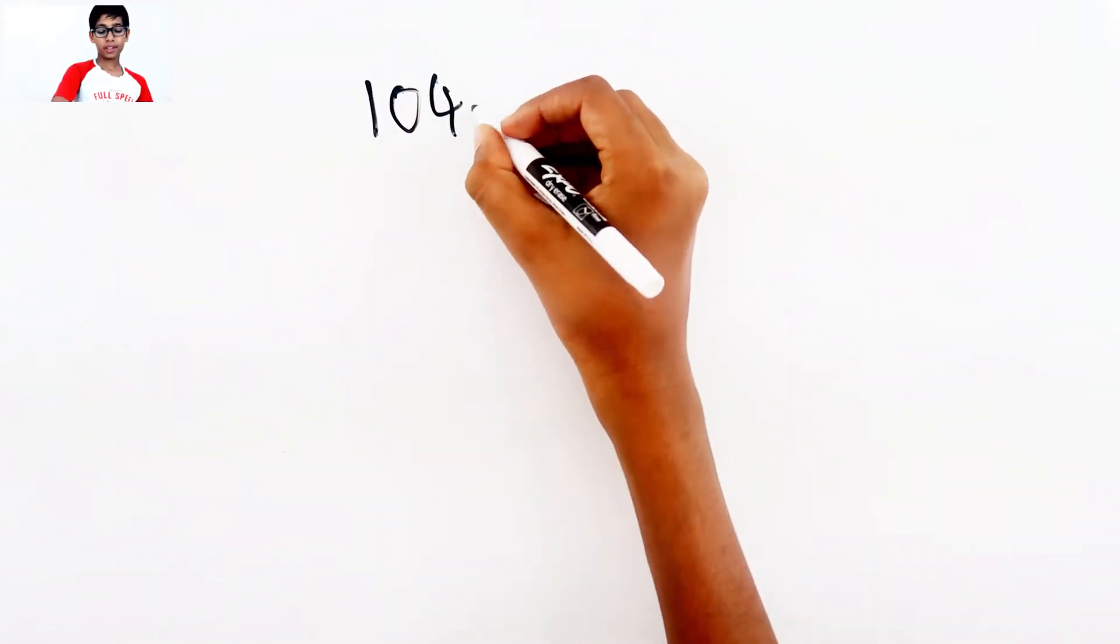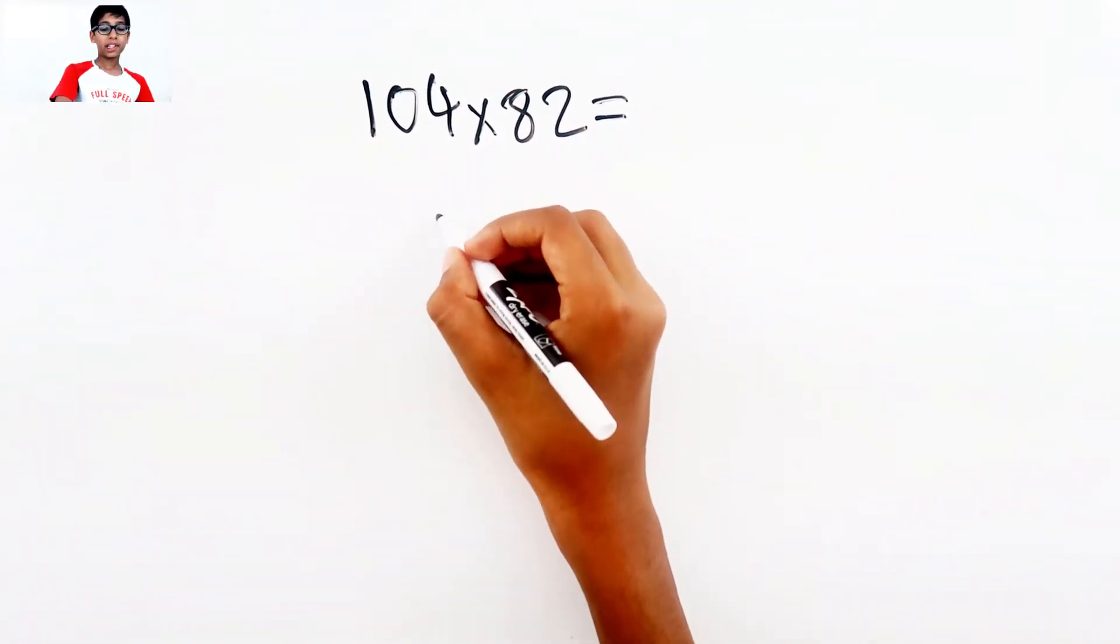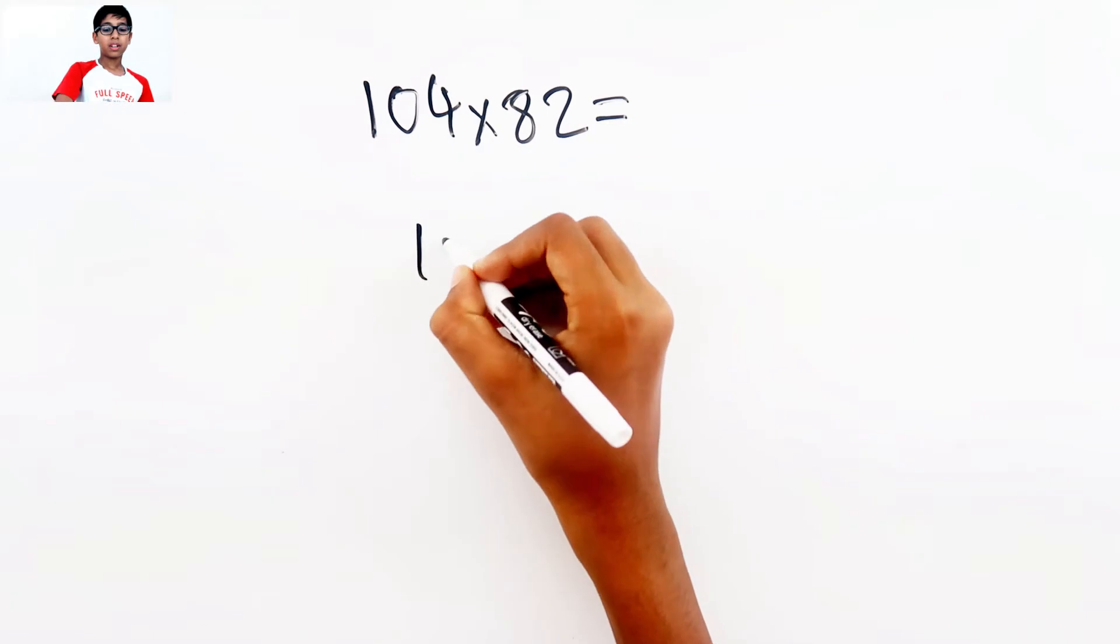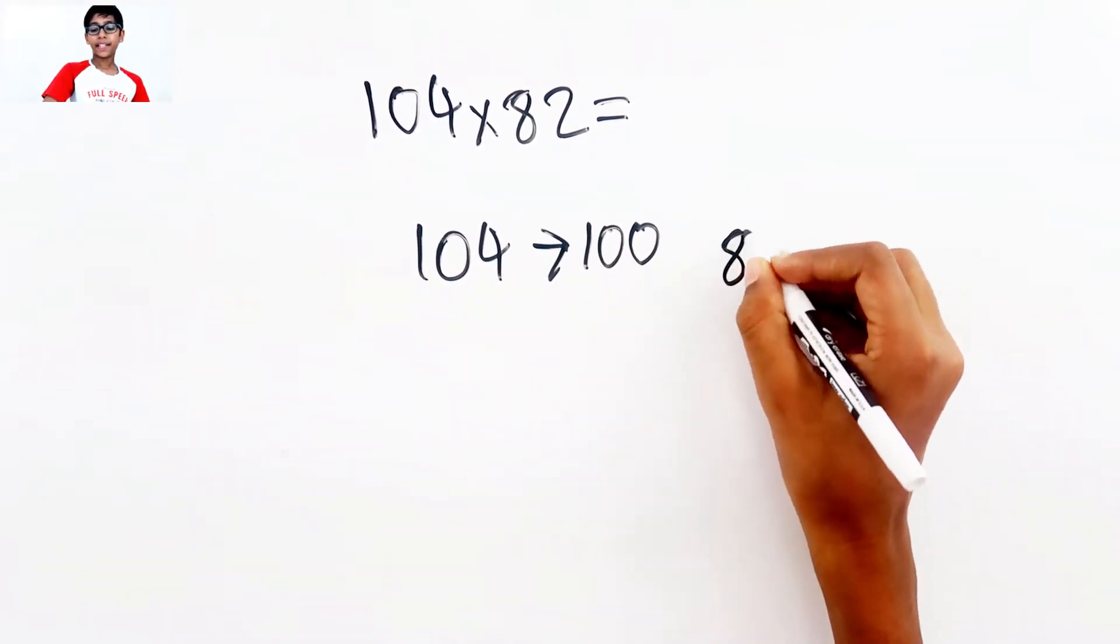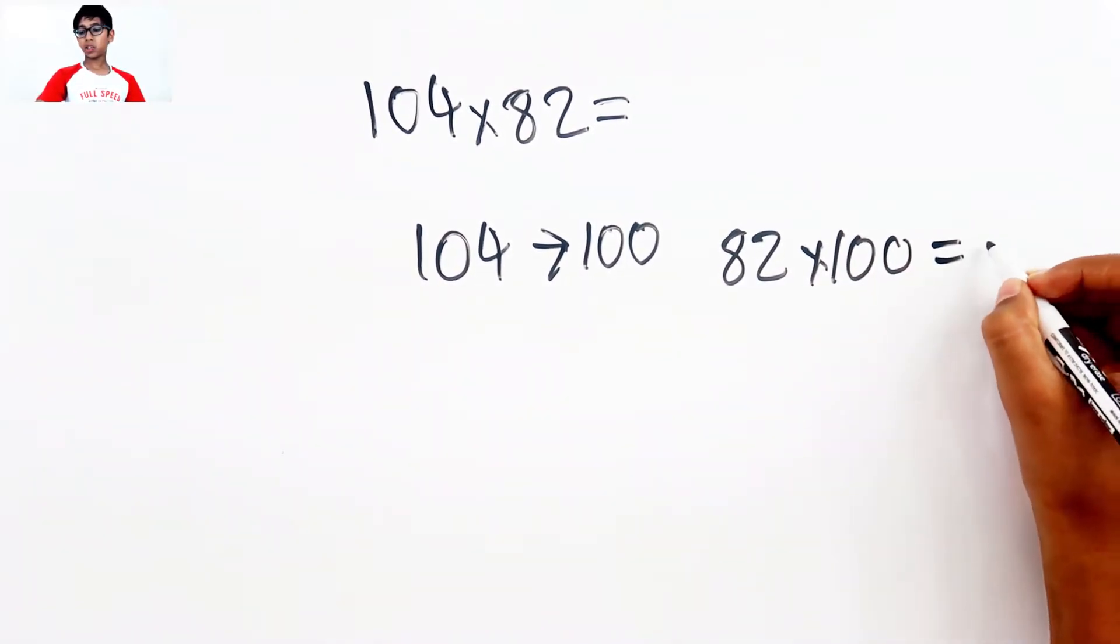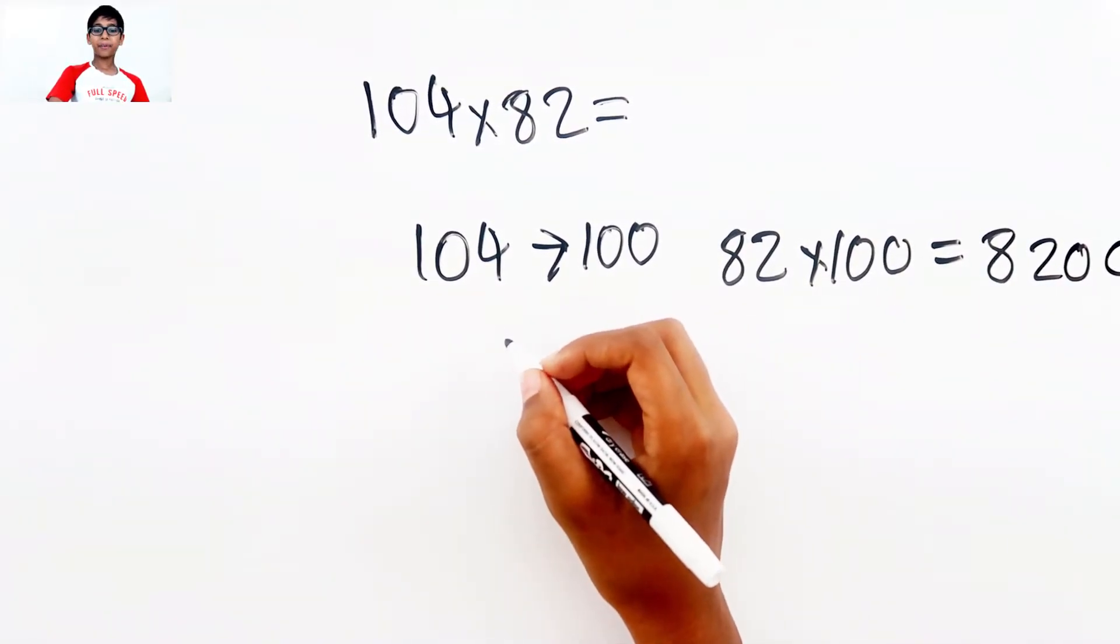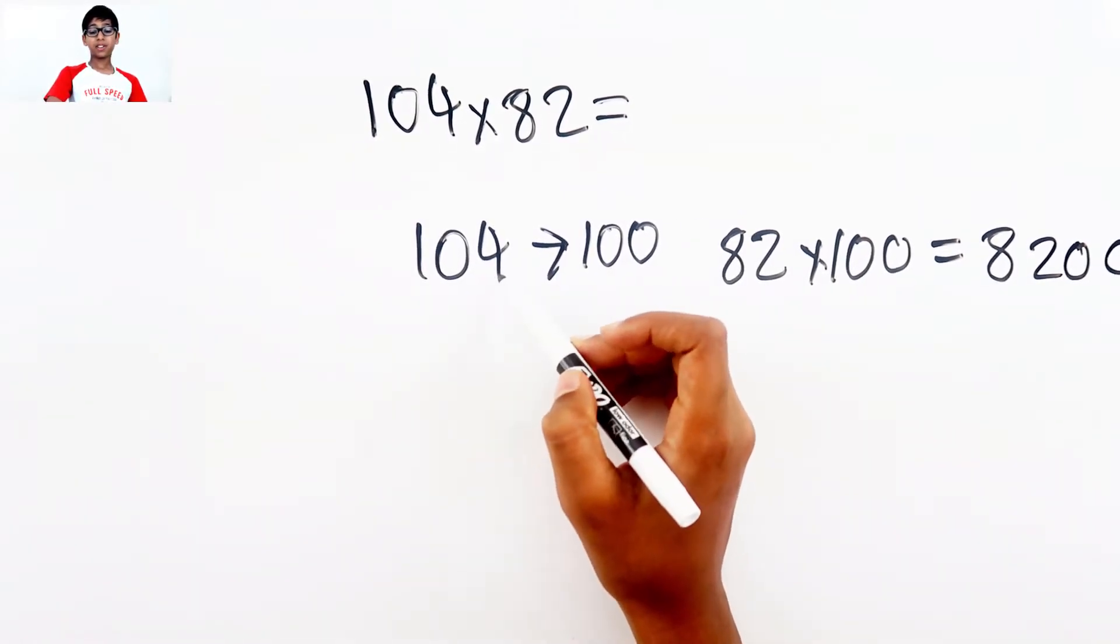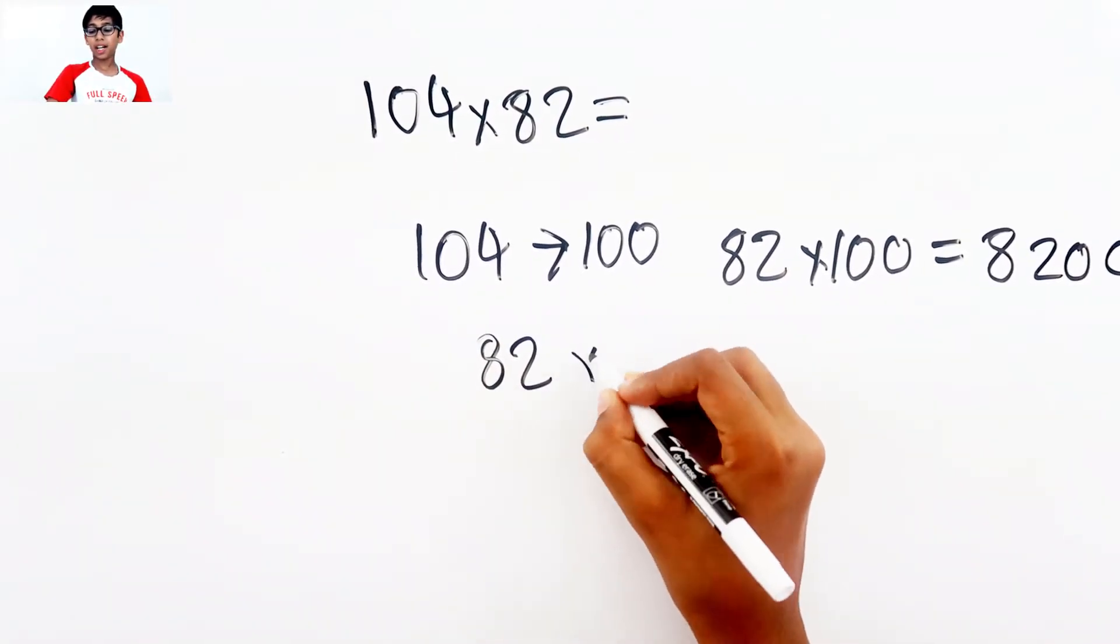Now let's do another problem. This time we're gonna do 104 times 82. So let's turn the 104 into 100. So 82 times 100 equals